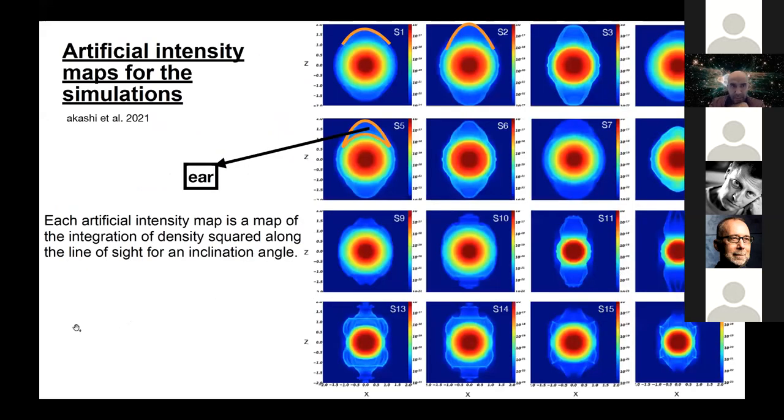Here I start with the artificial intensity maps for the simulation that we have done. This actually is the integration of density squared along the line of sight for an inclination angle that we choose here in the face on the meridional plane. So we have several cases here from S1 to S8. We see very nice ears here as you can see. For example, I mark here and here also. From S9 to S16 we don't really succeed to get the ears, but it's really nice shapes that we also show.